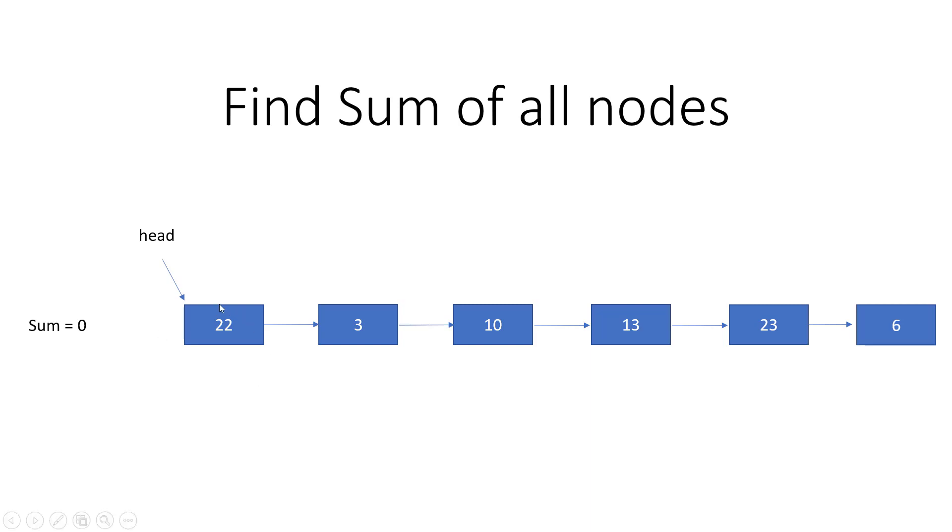When starting from the head node, we'll check whether the node is null or not. If the node is not null, then we add sum equals sum plus the node value, and then move the node to the next value.